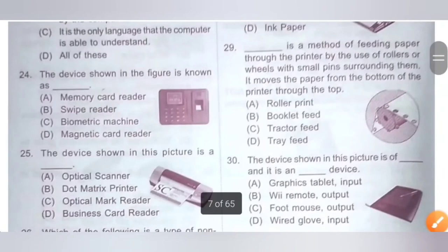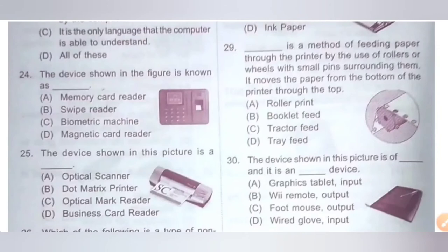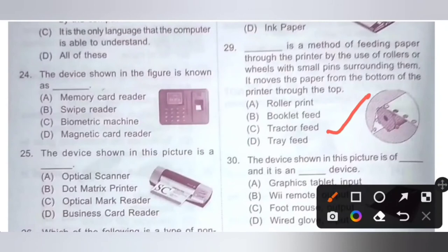Question 29: Dash is a method of feeding paper through the printer by the use of rollers or wheels with small pins surrounding them. It moves the paper from the bottom of the printer through the top. Options: A. Roller print, B. Booklet feed, C. Tractor feed, D. Tray feed. The correct option is Option C — tractor feed.